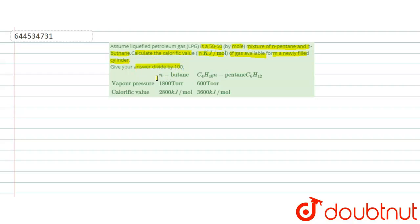Values are given: butane C4H10 and pentane C5H12. The pressure of butane is 1800 torr and pentane is 600 torr.